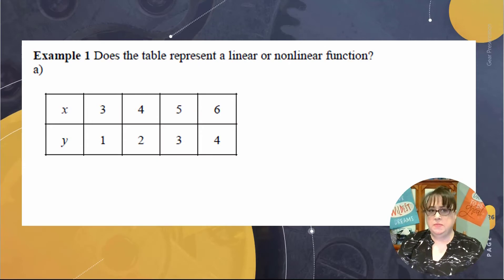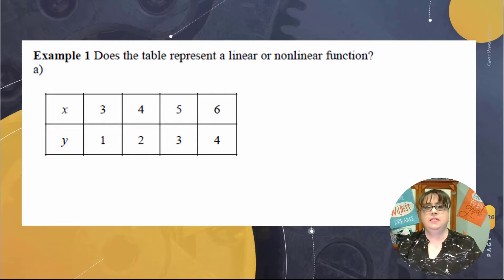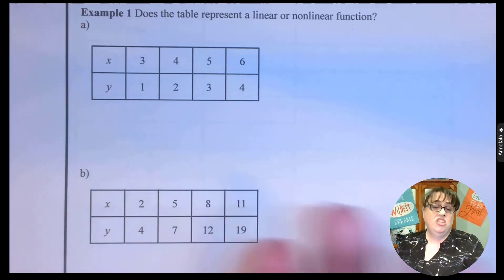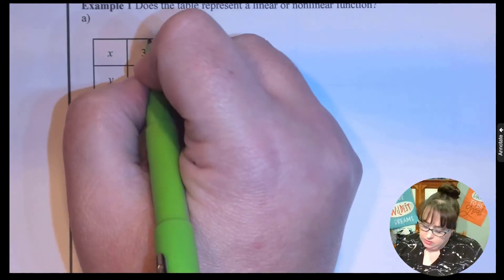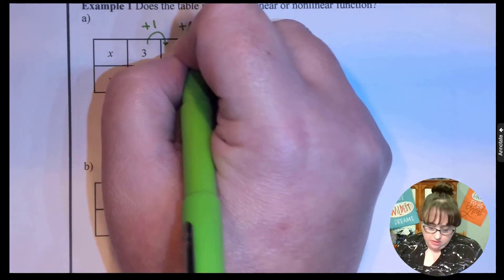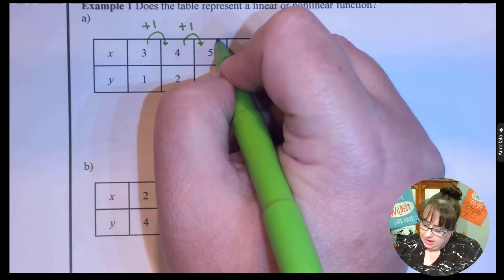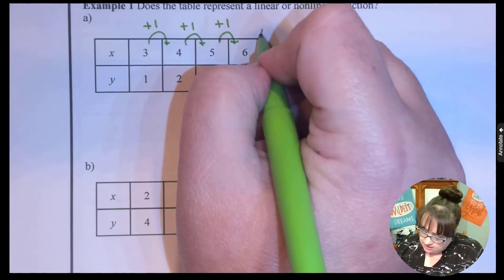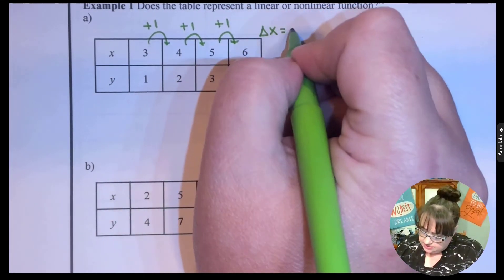So we're going to be looking at some different examples. Does the table represent a linear or nonlinear function? Basically, what we're looking at is: do we have a slope? Can I make a slope out of these equations? The easiest way to do that is to look at the change between the numbers. Between 3 and 4, I added 1, between 4 and 5, I also added 1, and between 5 and 6, I again added 1. So our delta x is equal to 1.